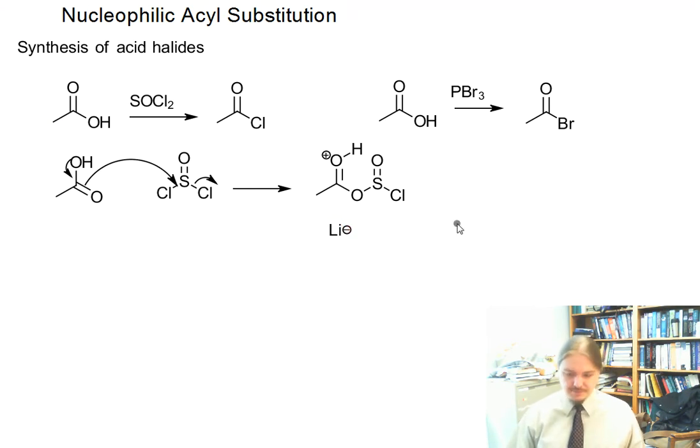And now we have our chloride anion left over, and we have a protonated intermediate. Chloride's a good nucleophile, so it can attack here. And now this is kind of looking like other nucleophilic acyl substitution reactions.